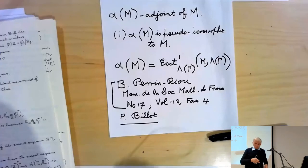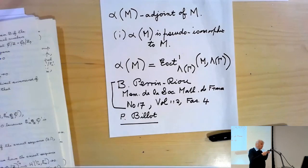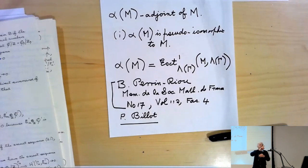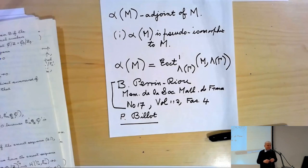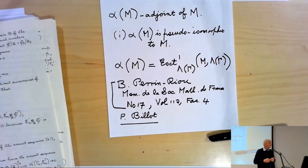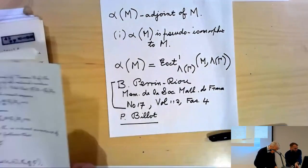Any questions? [Audience member: It was 229.] I knew it was early 200s — square root of 229 and p equals 3 was Ralph's example. He gave many examples. That's one of many. Other questions? All right, let's thank our speaker again.